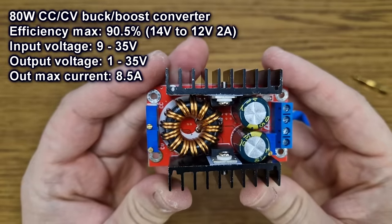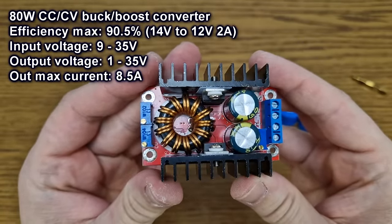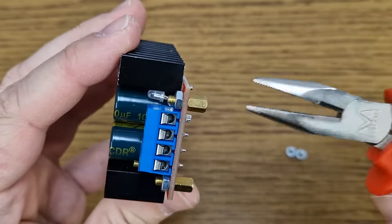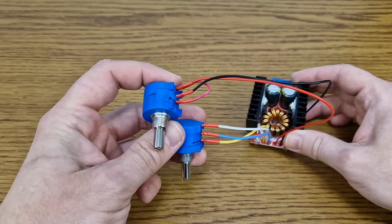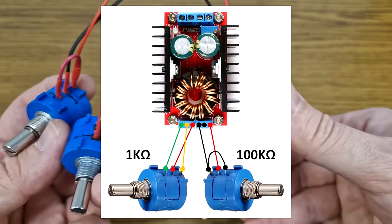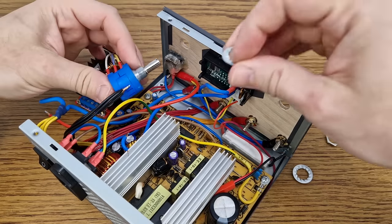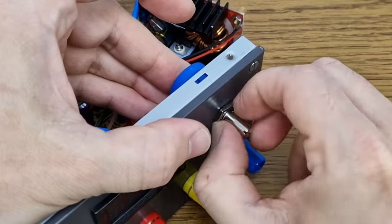This constant current constant voltage buck boost converter will be used for the variable output. Four standoffs need to be added to mount the converter on the metal case. I will replace the two multi-turn potentiometers with bigger ones according to this schematic. I'm going to add some large washers in the back because I don't want them to stick out too much in front of the panel.